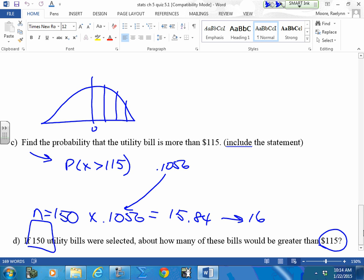Just use your basic rules of rounding. If it's less than 0.5, drop it down. But you can't have 0.84 of a bill. So that was one problem, and the other problem was using 115. That was the probability statement, not the amount of bills.